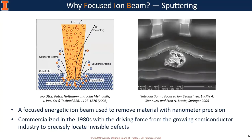So why focus the ion beam? Electrons are not the only charged particles that can be accelerated and focused. The purpose of using ion beam is sputtering. Ions have much greater mass than electrons — even the lightest ion has almost 2000 times the mass of an electron. So when the focused ion beam strikes the sample, sputtering will occur, removing sample material in a controlled way. This cannot be done with SEM. FIB was commercialized in the 1980s, driven by the semiconductor industry to precisely locate invisible defects, and it rapidly spread over many academic areas. Simply put, FIB is used to remove material to high depth and spatial accuracy, and can also build structures when precursor gas is introduced.